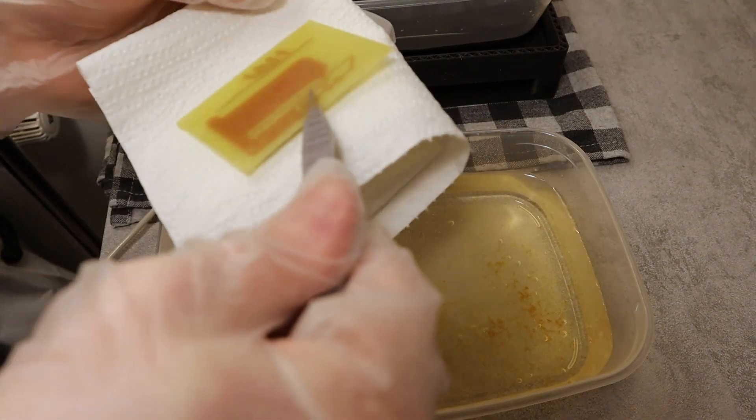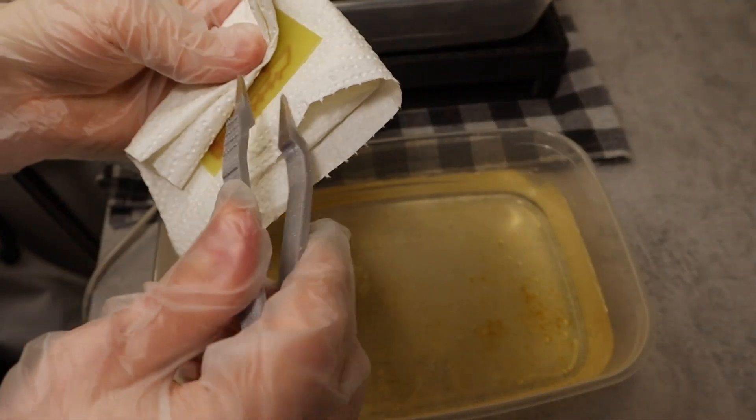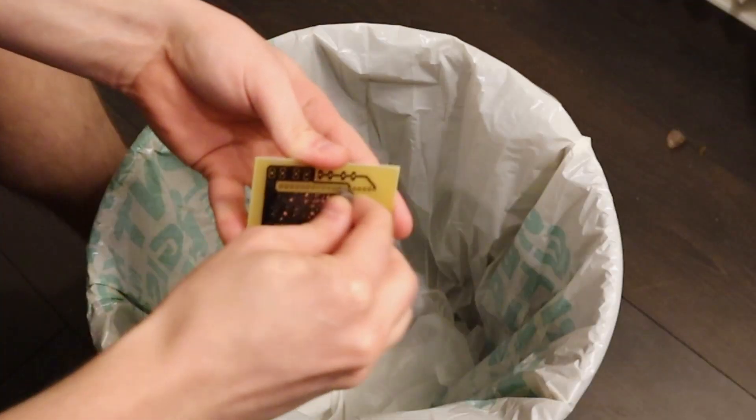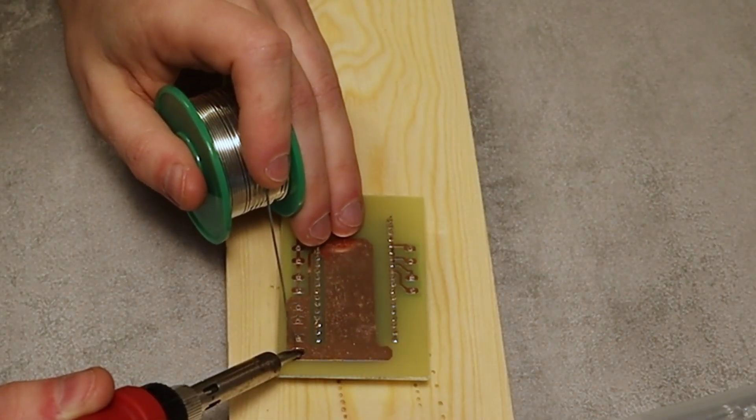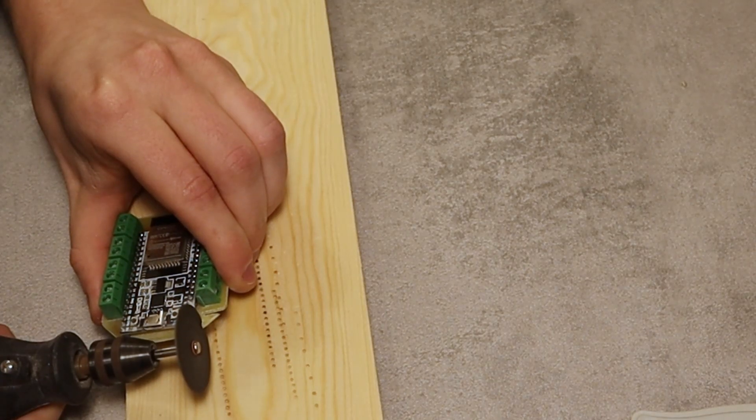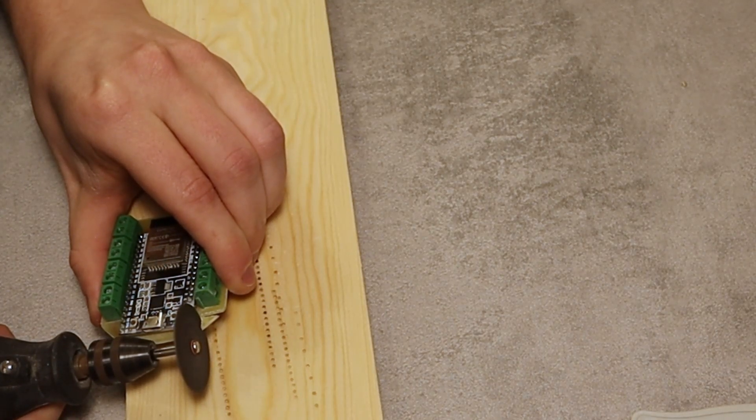Once the board is done and all excess copper is gone I clean the board in water and use steel wool to remove the toner. Drill all the holes, solder all the components and cut it into the shape I want. Here I'm using a Dremel.